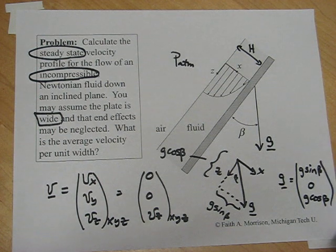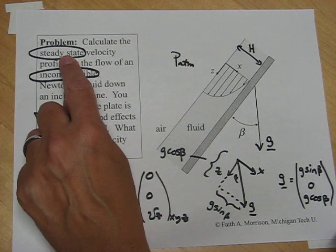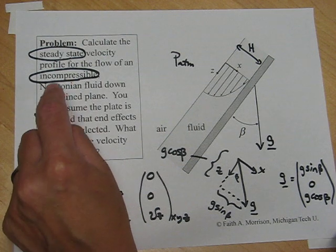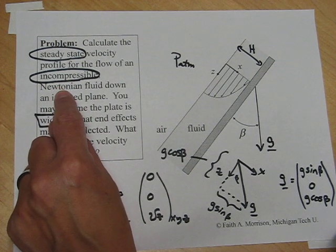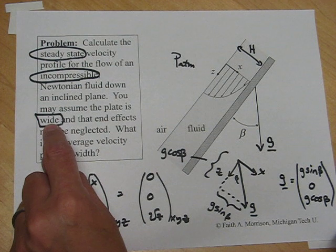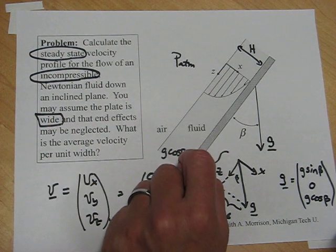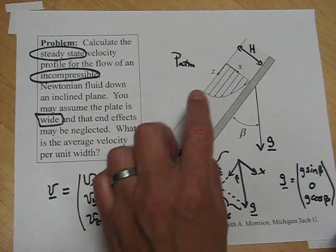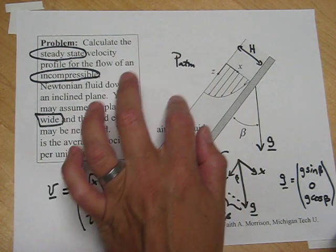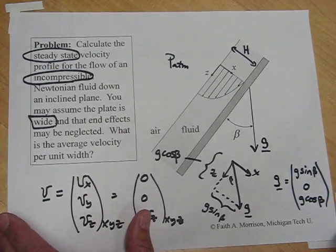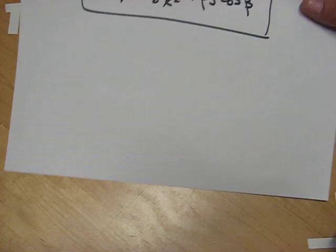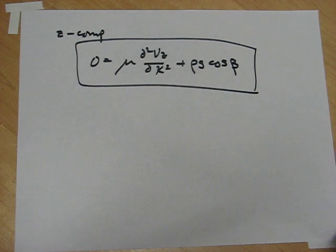We applied the continuity equation for the mass balance and the Navier-Stokes equation for the momentum balance. We assumed steady flow with a constant density, Newtonian fluid, wide flow which has no y variation in the velocity, and a flow where the pressure did not vary in the z direction.